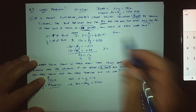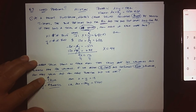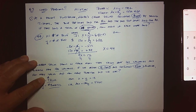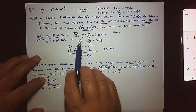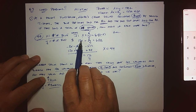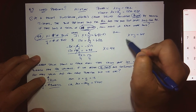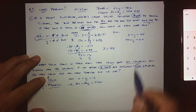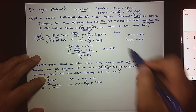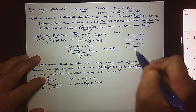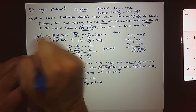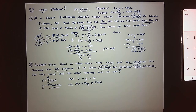After the y's cancel, we're left with 4x equals 176. Dividing both sides by 4 gives x equals 44, so the cheer squad sold 44 blue shirts. To find y, I'll substitute x equals 44 into the simple equation x plus y equals the total. Subtracting 44 from both sides gives y equals 20, so they sold 44 blue shirts and 20 red shirts.